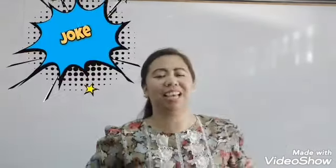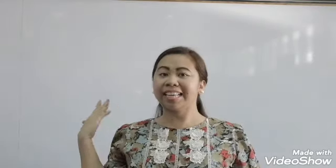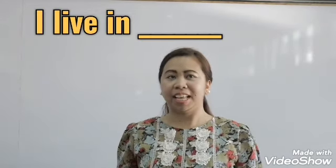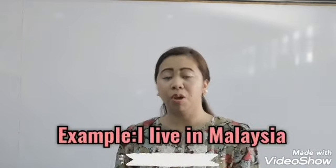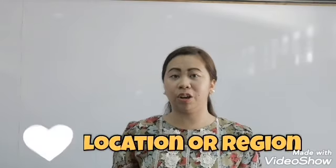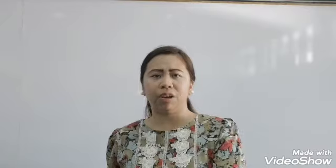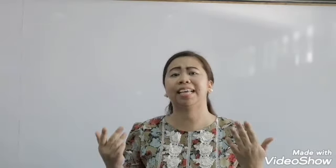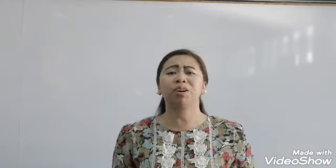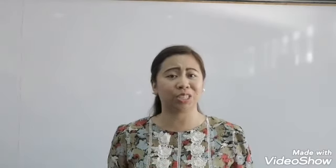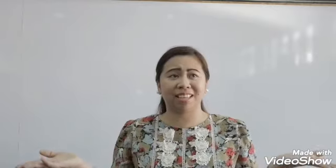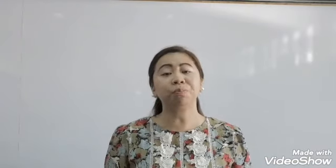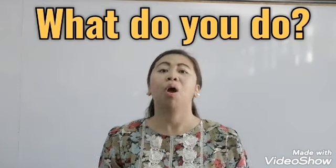The fourth phrase is 'I live in.' You can say: I live in Thailand, I live in Malaysia, I live in Nakhon Phatom. 'I live in' refers to the location or region where you live. You wouldn't say 'I live in an apartment' or 'I live in a condo' because those aren't really a location or region — you'd want to specify the region or location where that apartment is.